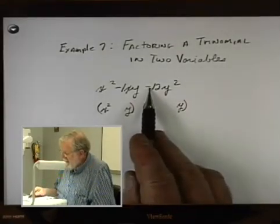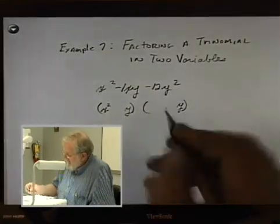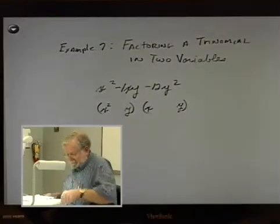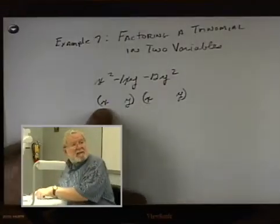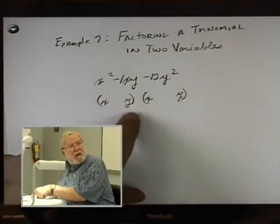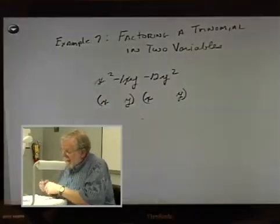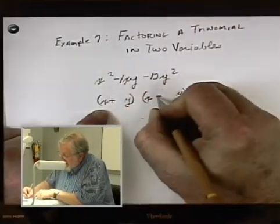So let's look at the signs. This is a negative. If this is a negative, it means one of these. Whoops. What did I do here? It's going to be x times x to get x squared, y times y to get y squared. One's negative and one's positive. So I'll just write a positive here and a negative here.